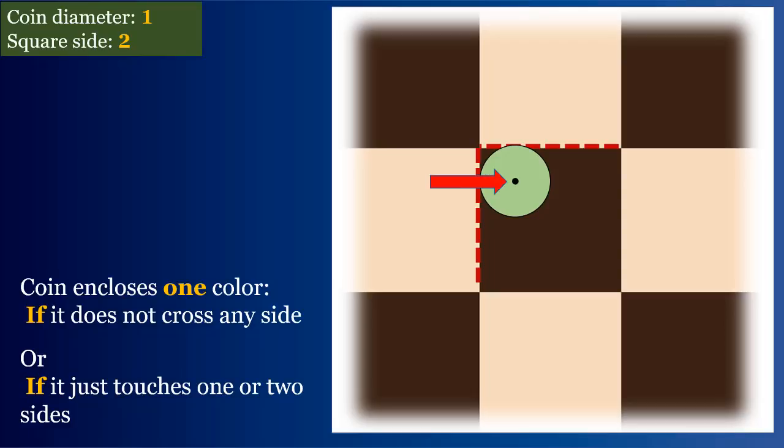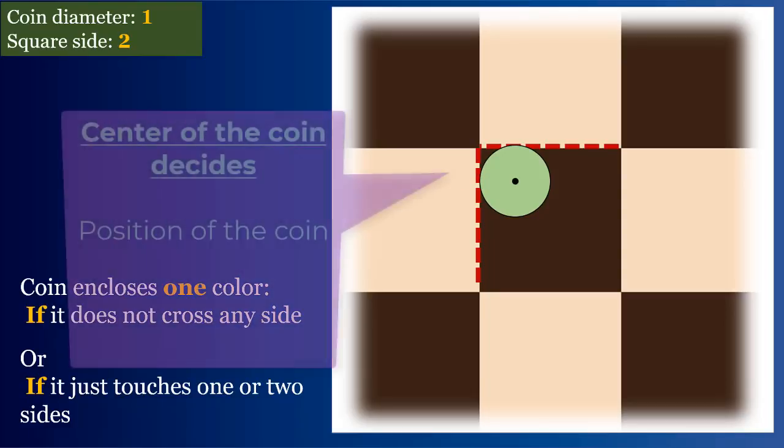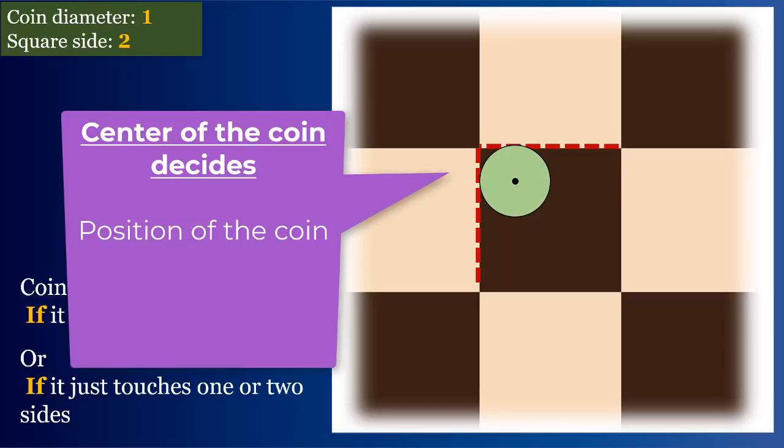just touching one side or two sides is the maximum limit for a coin to enclose just one color. As shown here, this is the center of the coin.